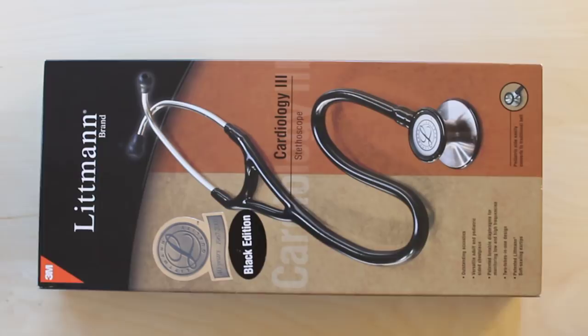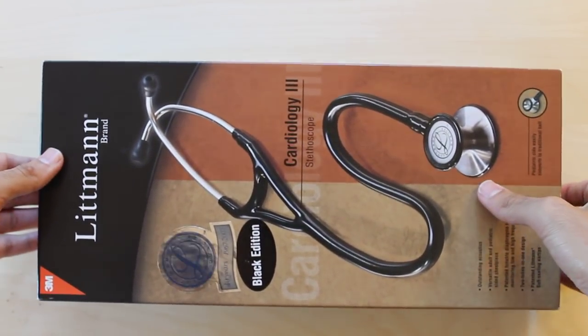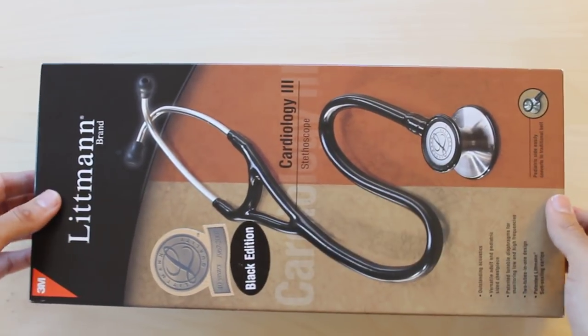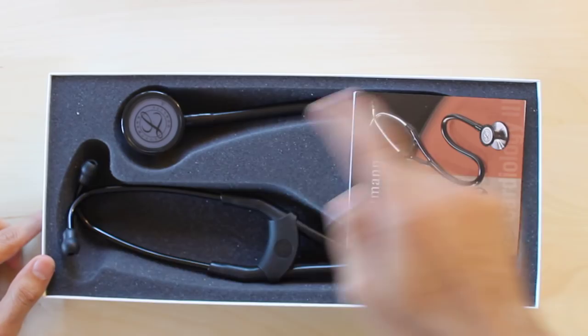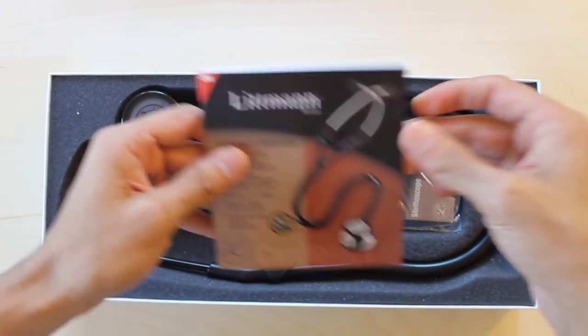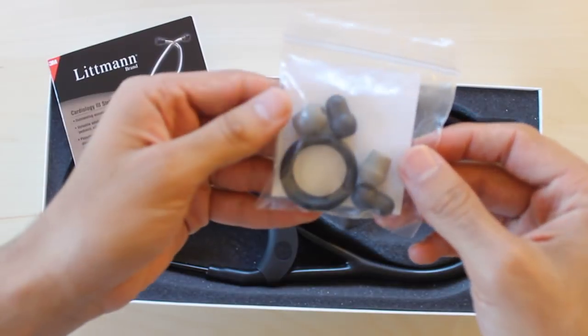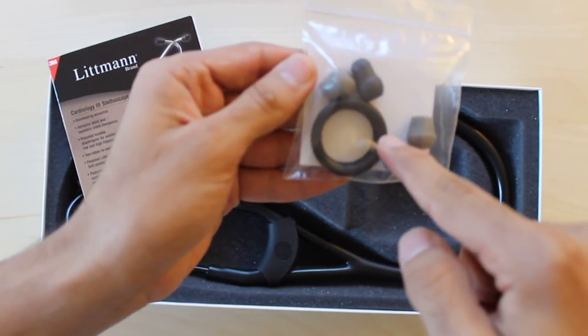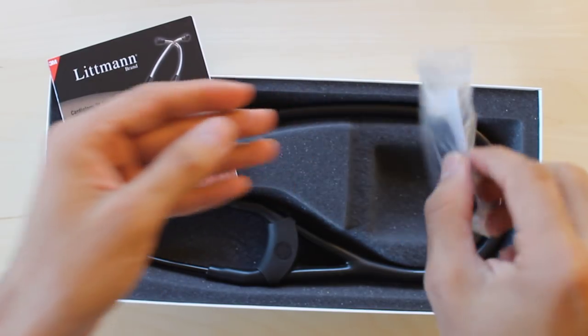For some reason I kept the original packaging of this stethoscope. So if you're the type of person that enjoys unbox therapy, here you go. You open up the stethoscope box, I got the black edition, and here's what you get: the stethoscope itself, a Littmann cardiology book, and a little bag with the actual component to convert it to a bell and extra pairs of ear cushions.